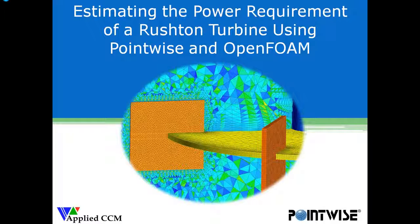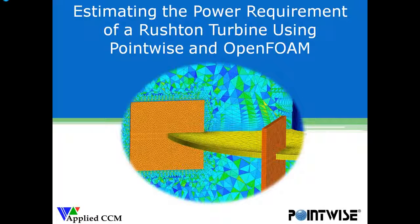Welcome everybody to today's webinar. We're going to be talking about how to estimate the power requirement of a Rushton turbine using PointWise and OpenFOAM. We're going to walk through the entire process: generating the grid in PointWise, setting it up for OpenFOAM, then actually setting up the OpenFOAM case, running the calculation, and then post-processing the results.